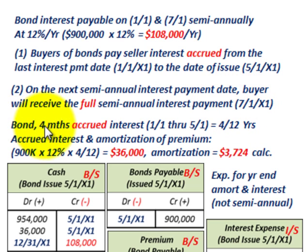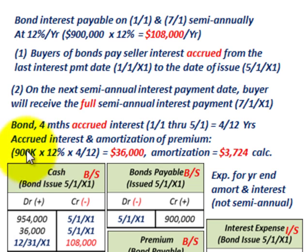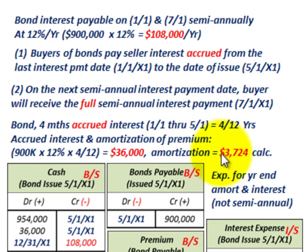For our calculations: there are four months of accrued interest from 1-1 through 5-1, which is 4/12 of a year. The accrued interest is $900,000 times 12% times 4/12, giving us $36,000. We'll also have a premium amortization amount of $3,724, which we'll calculate in detail.